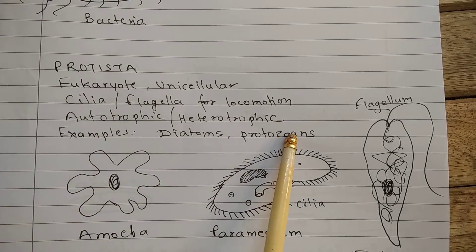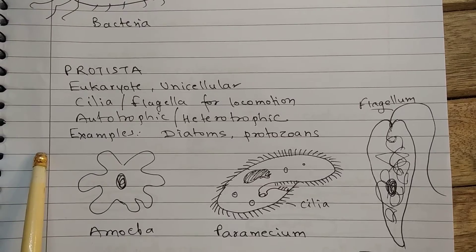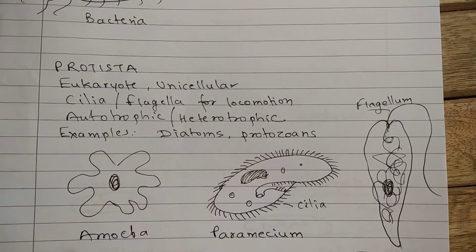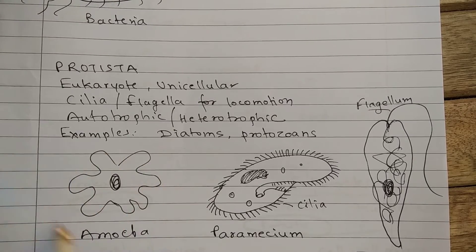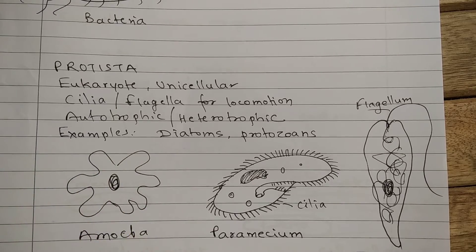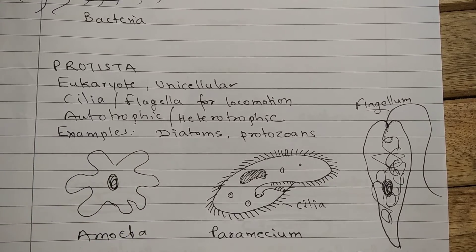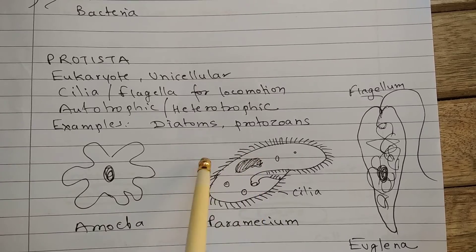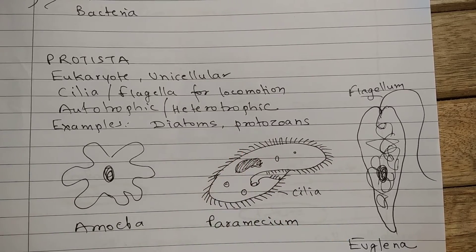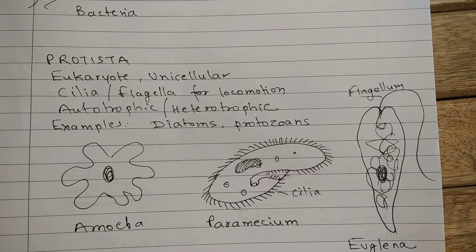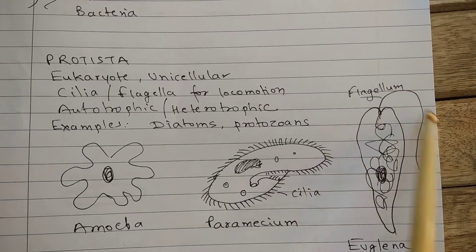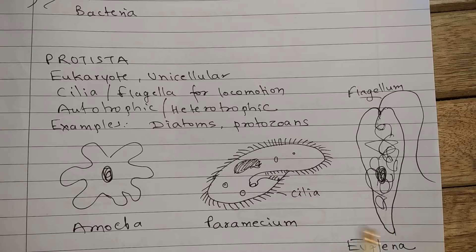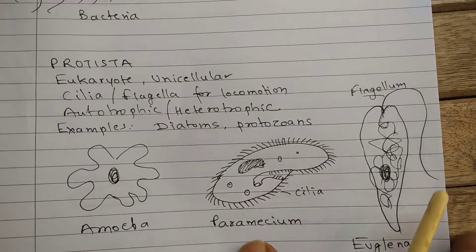Some examples are diatoms and protozoans. This is Amoeba, which has an irregular shape — it produces pseudopodia for locomotion and for catching food. This is Paramecium, which has cilia all over its body for locomotion. This is Euglena, and Euglena has a flagellum — usually the flagellum is present in a smaller number, it can be one or two. This is all about the kingdom Protista.